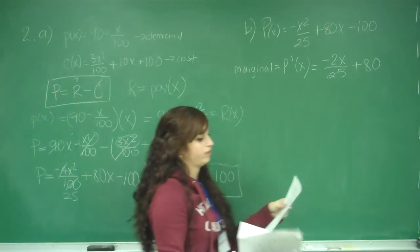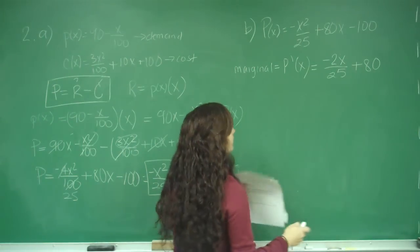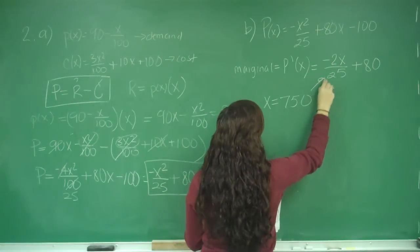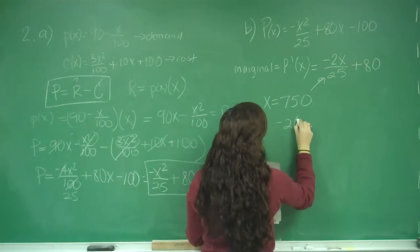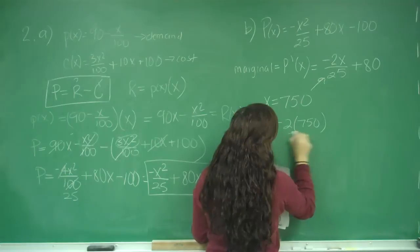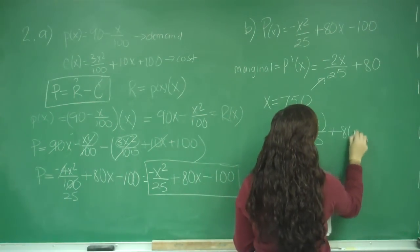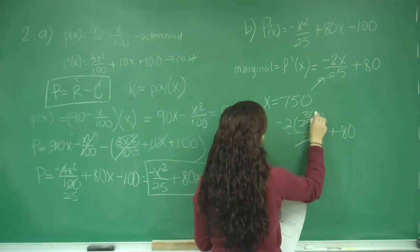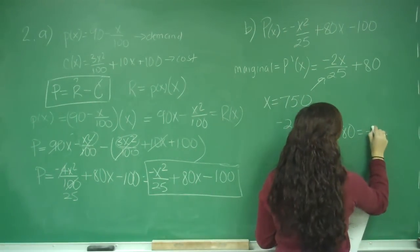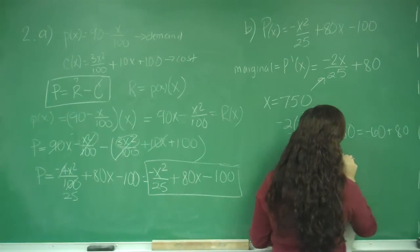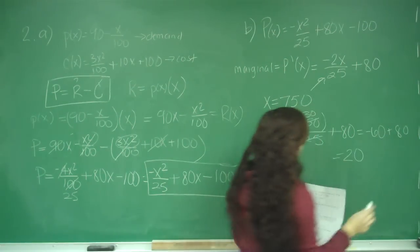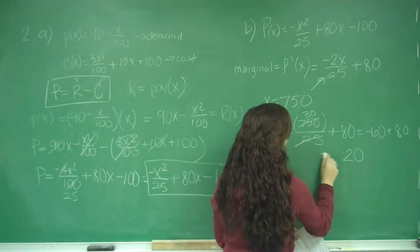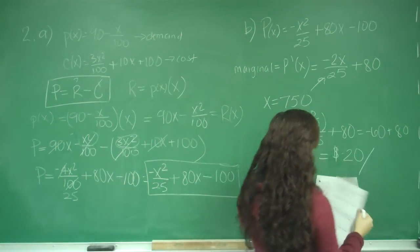They want to know the marginal profit when 750 items are sold, so x = 750. We plug it in: -2(750)/25 + 80. Since 25 goes into 750 thirty times, that gives -60 + 80 = 20. The result is $20 per item.